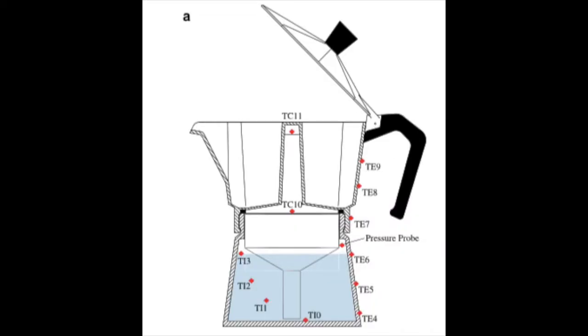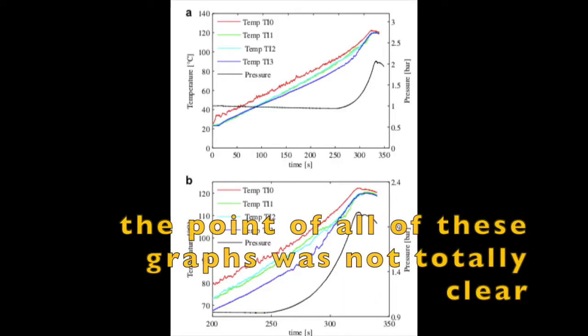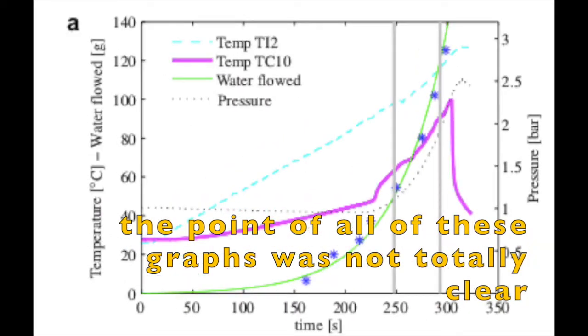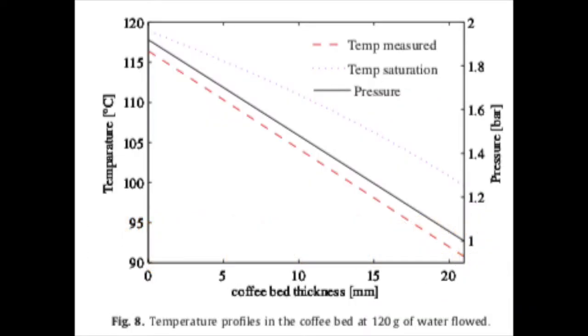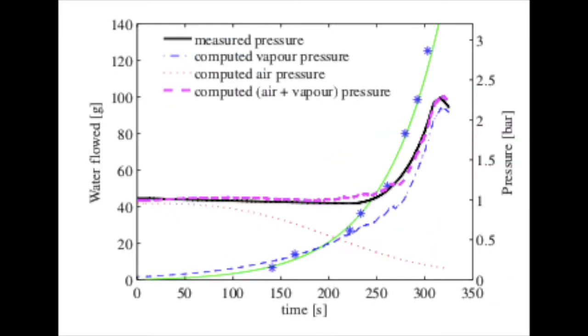Going so far as to use thirteen temperature probes and a pressure probe to create a dizzying array of eight graphs of temperature, pressure, and volume flow at different times, though they did have the same insight as King in that the total pressure was the vapor pressure plus the air pressure.